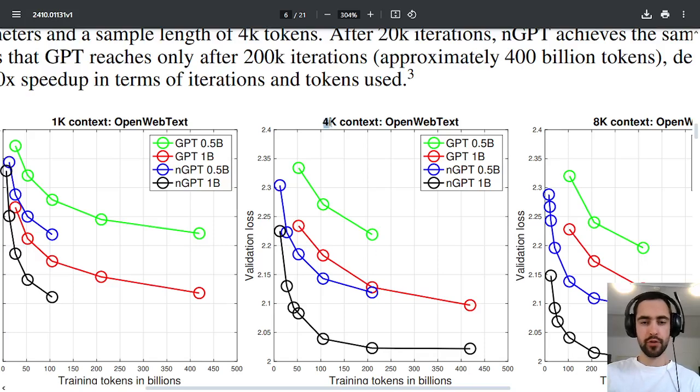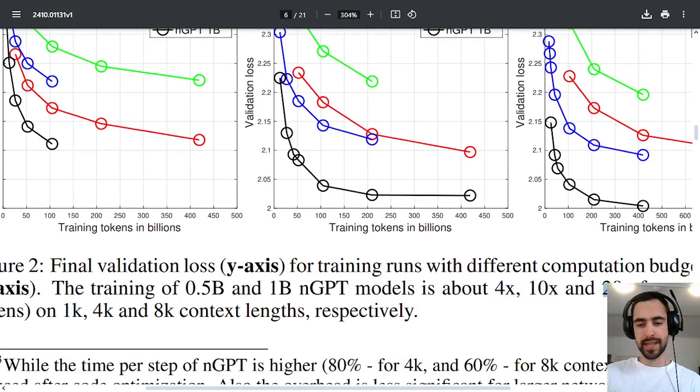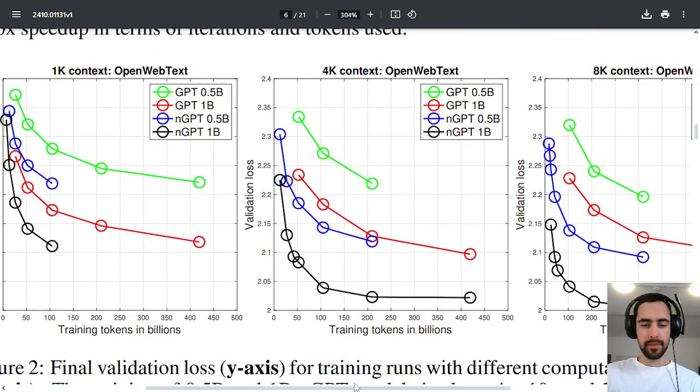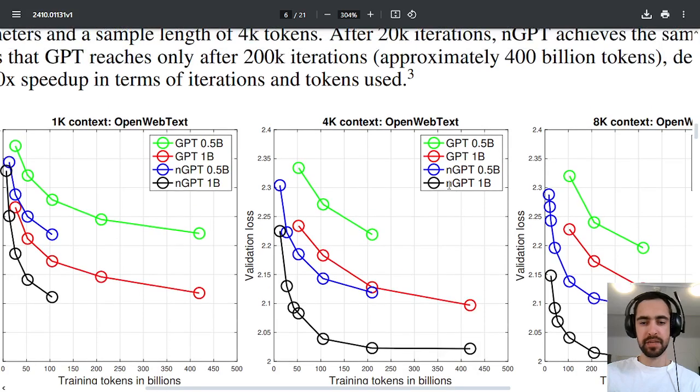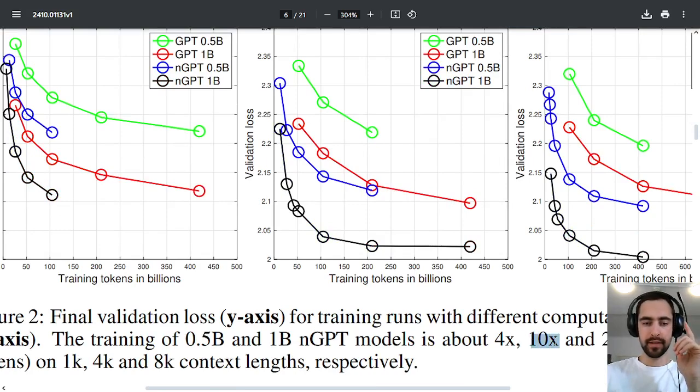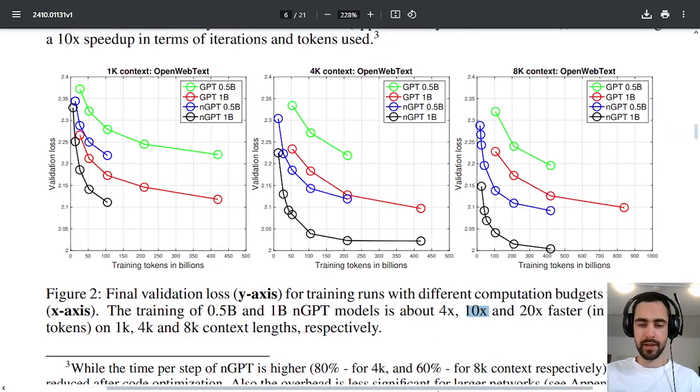Then we have 4k context window and 8k context window, so they get 4 times, 10 times and 20 times faster, these three, but this is in terms of training tokens in billions, like the validation loss versus training tokens. But also this nGPT has a little bit more steps and calculations, so for example if this is 10x faster in the training tokens versus validation loss, in reality it's maybe seven times or eight times faster because there are some extra steps. Let me zoom out a little bit so you can maybe check all of this out.